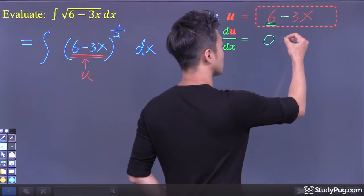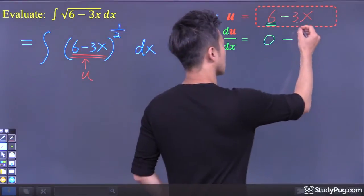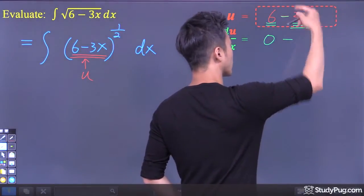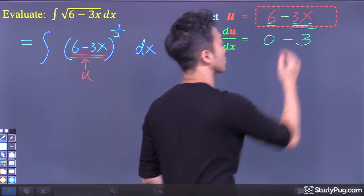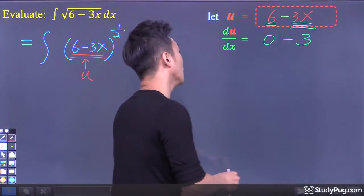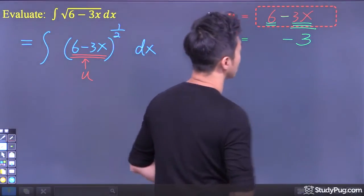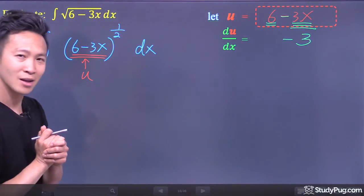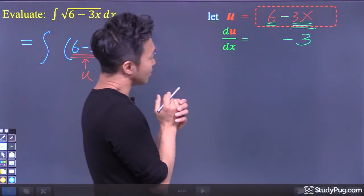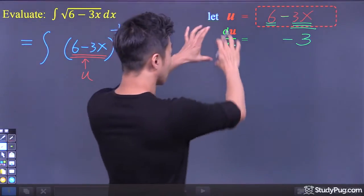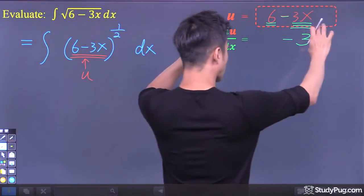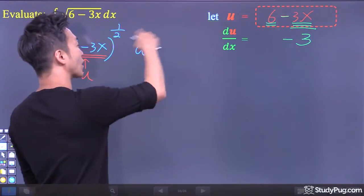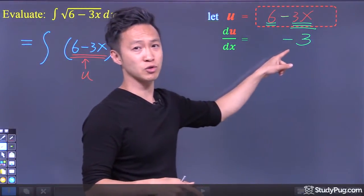The derivative of any constant is 0. What's the derivative of the second term? The derivative of 3x is just 3, and 0 minus 3 is negative 3. So now let's rearrange this differential equation to incorporate dx in our u-substitution.